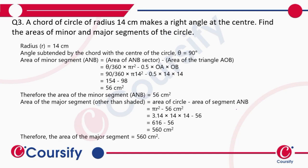A chord of a circle of radius 14 centimeters makes a right angle at the center. Find the areas of the minor and major segments of the circle. This is the circle, and the two radii make a 90 degree angle at the center.